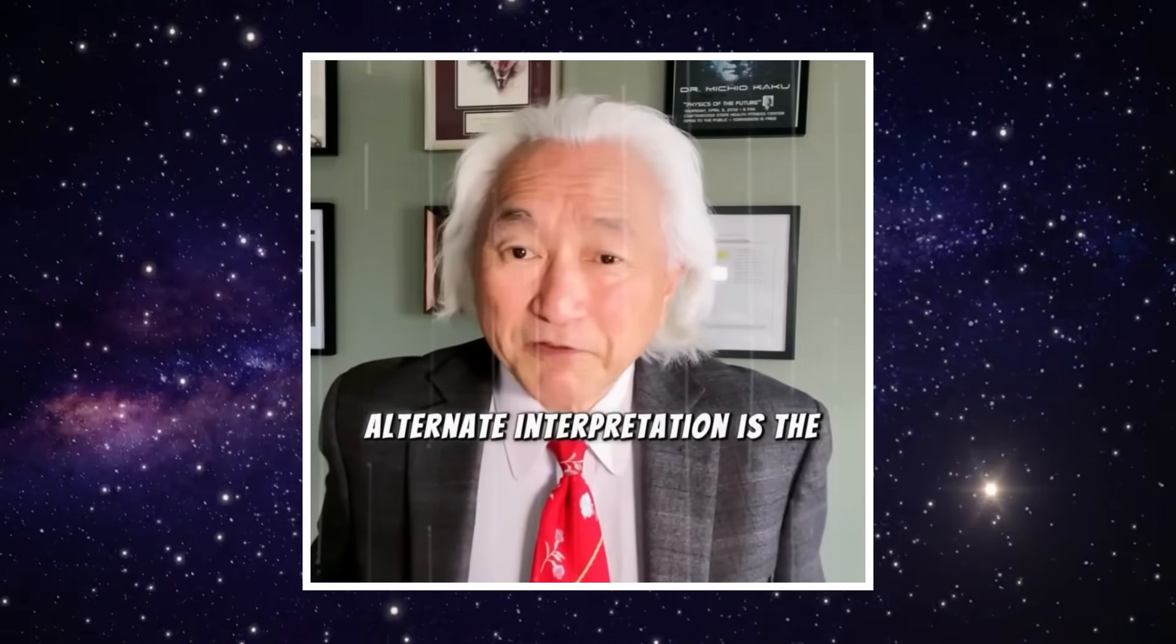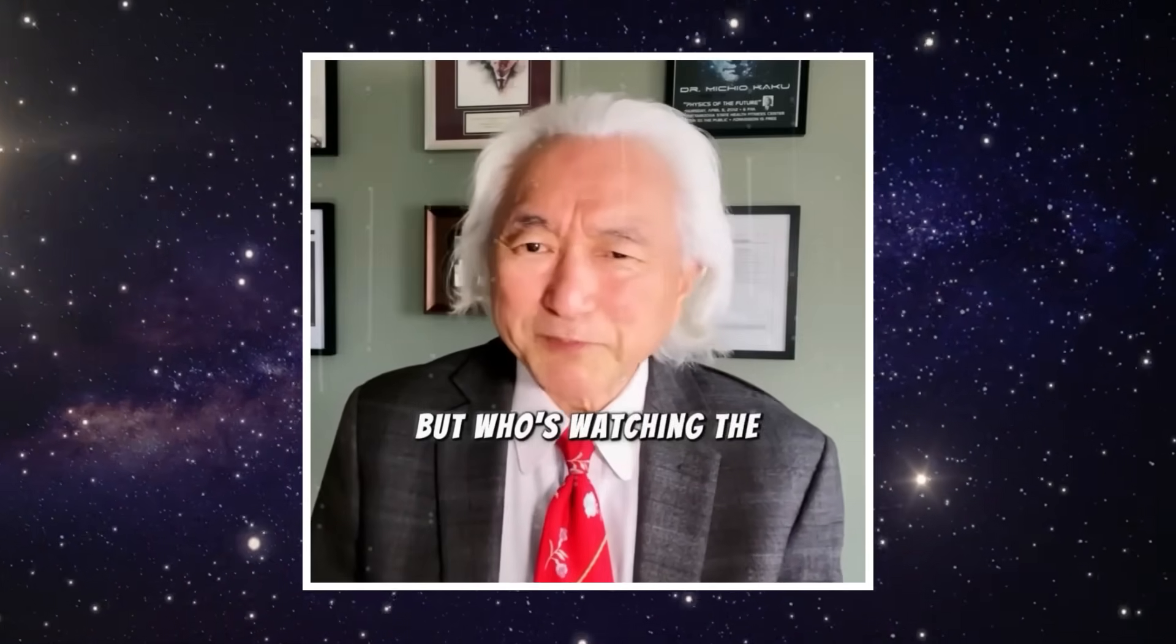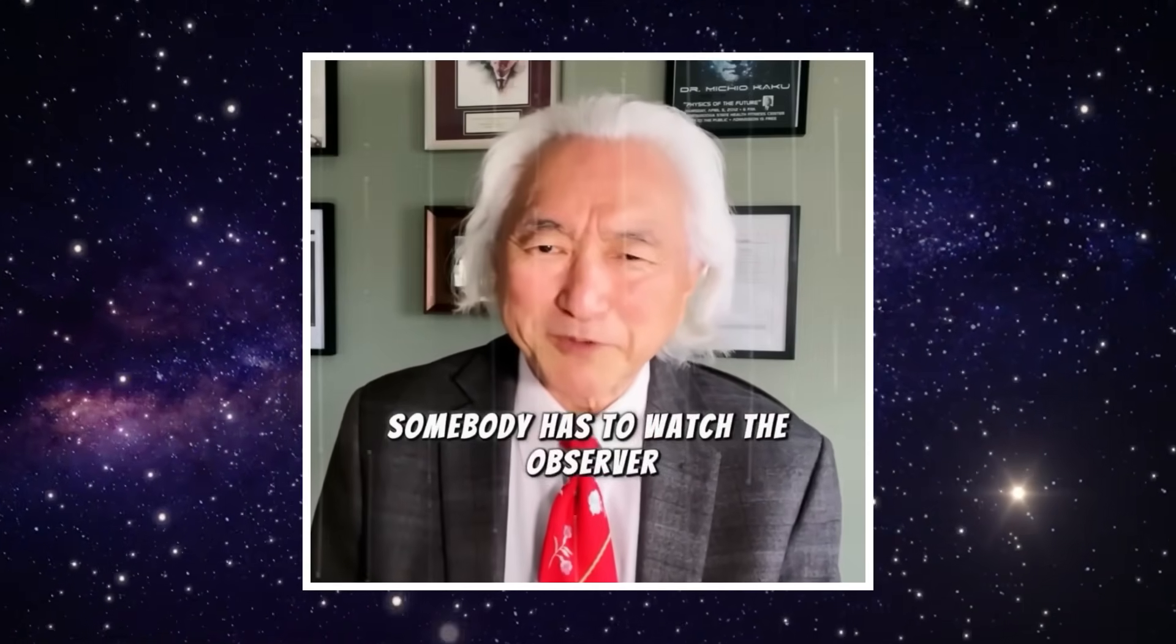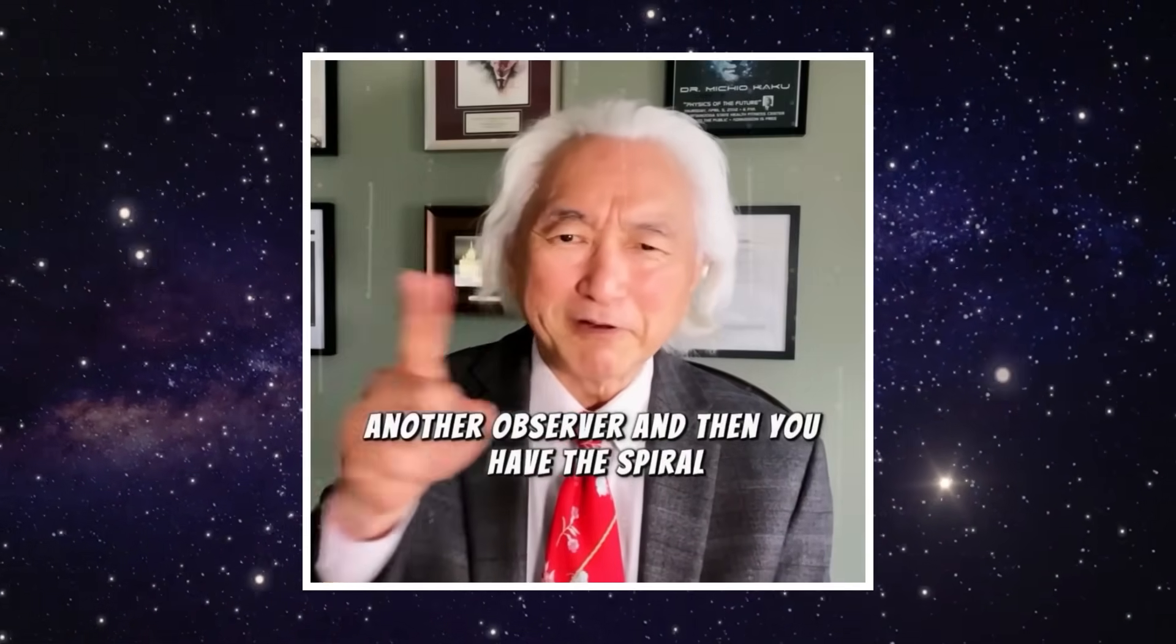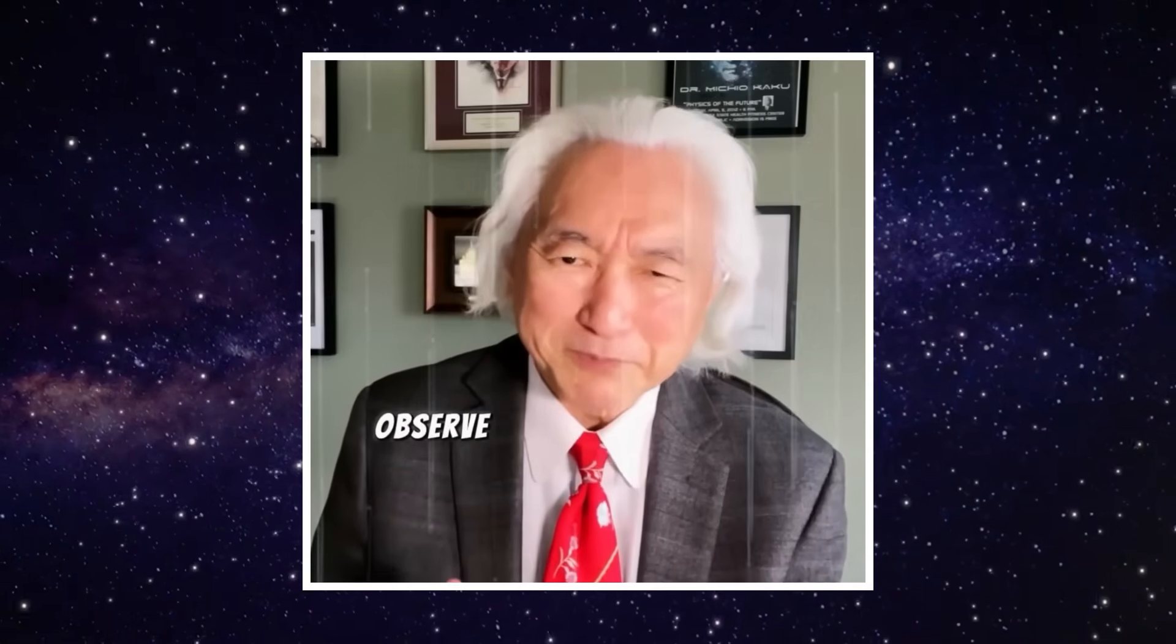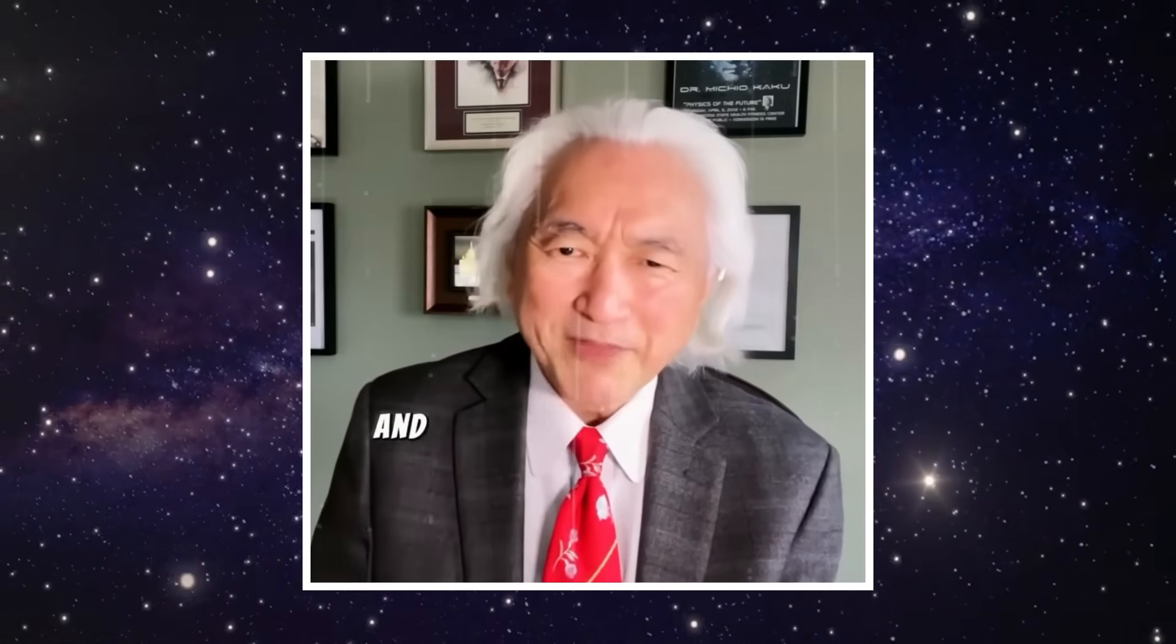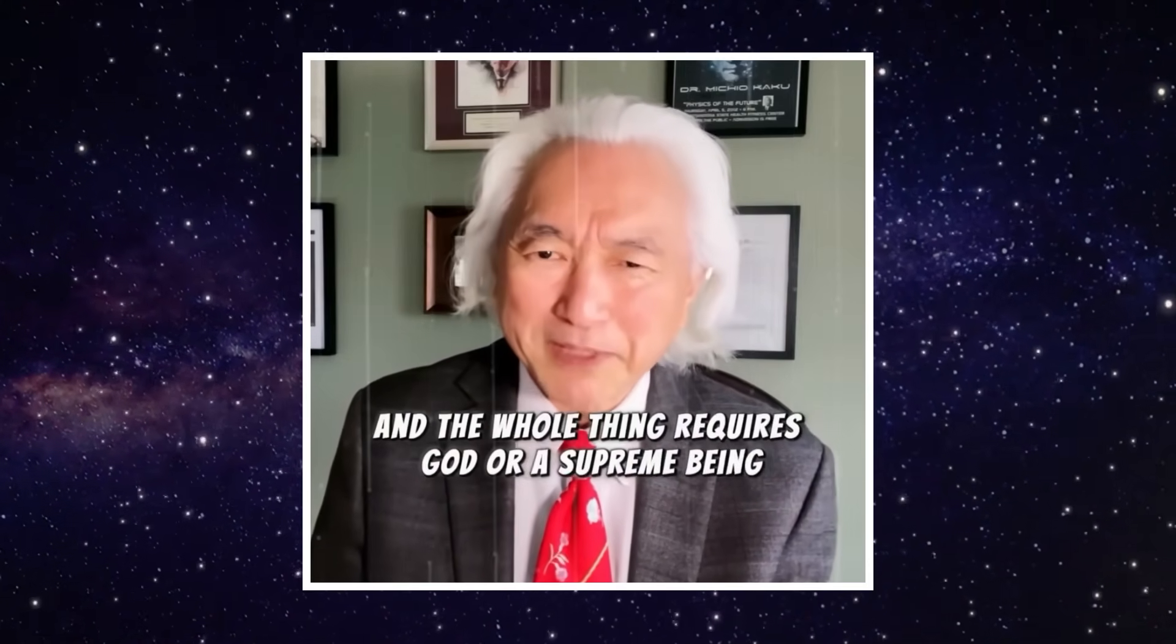The other alternate interpretation is the Wigner interpretation, because every experiment has to have an observer, but who's watching the observer? Somebody has to watch the observer, but who's watching the observer watching the observer? Well, another observer. And then you have the spiral, the spiral of observers watching other people observe the observers of the other universes, and the whole thing requires God or a supreme being.